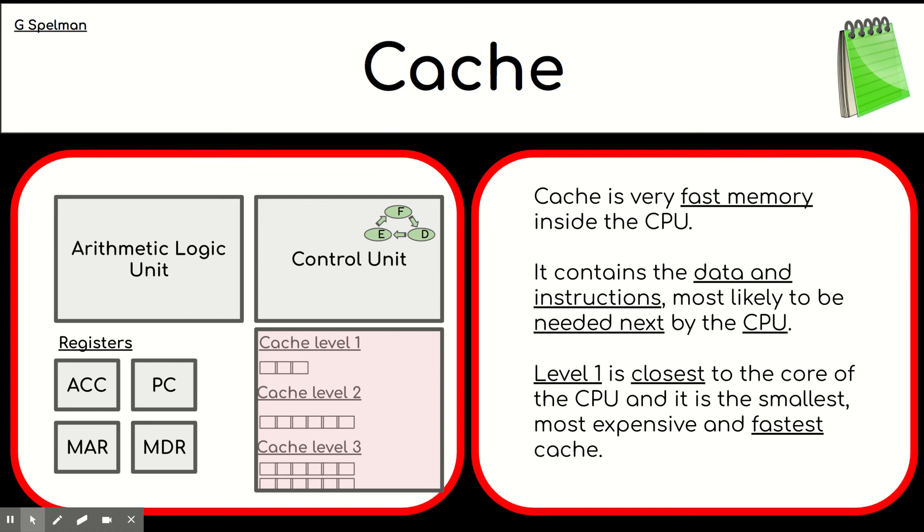Cache. Cache is another type of storage. It's very fast memory inside the CPU. It's not as fast as the registers. Still it is very fast. And it's quite small and there are three levels of it. And depending on the implementation of the hardware, some of that cache might actually not be inside the CPU, you know, level three might be outside.